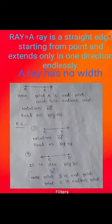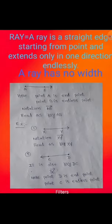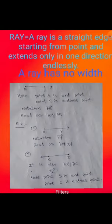Example: ray XY — X is the endpoint and Y is the endless point. Notation is XY ray, read as 'ray XY'. Another example: ray DC — D is the endpoint, C is the endless point, so it is ray DC. You can take any direction, but there must be one endpoint and one endless point, and the endpoint is named first.